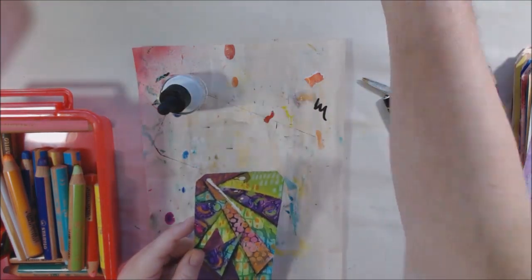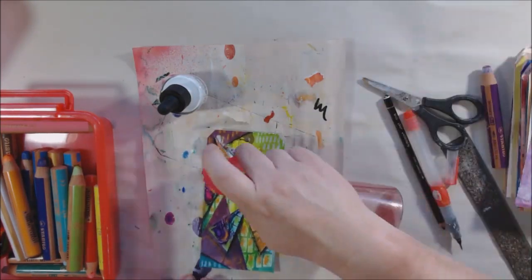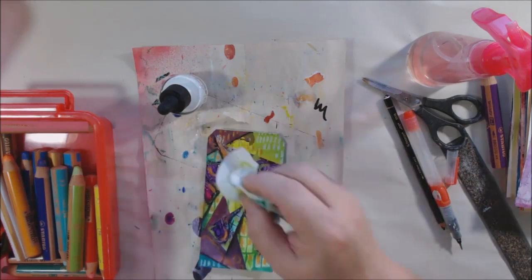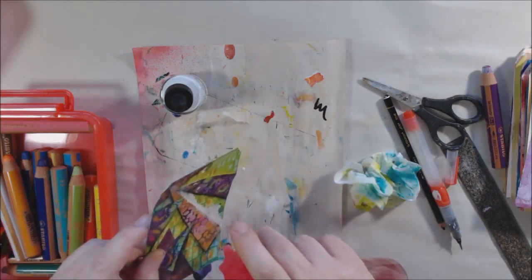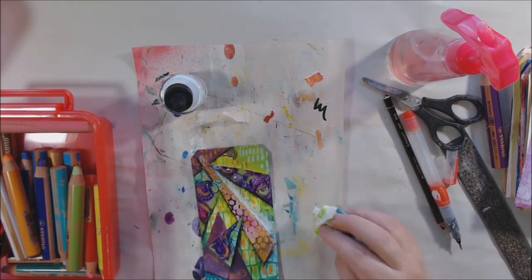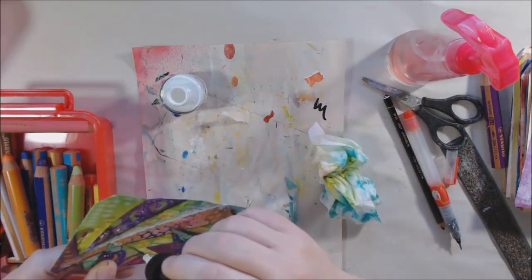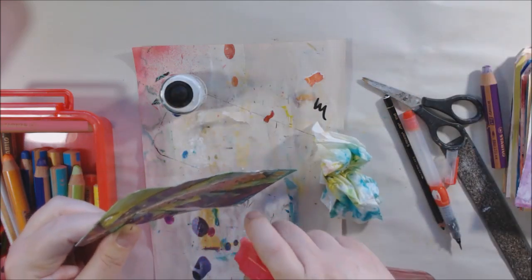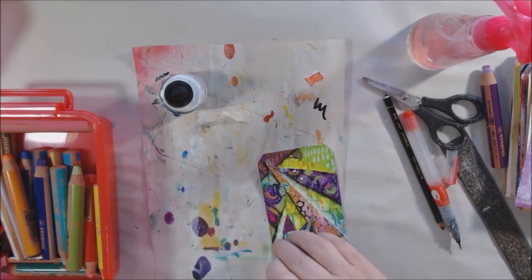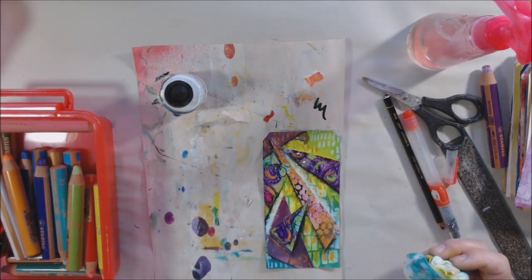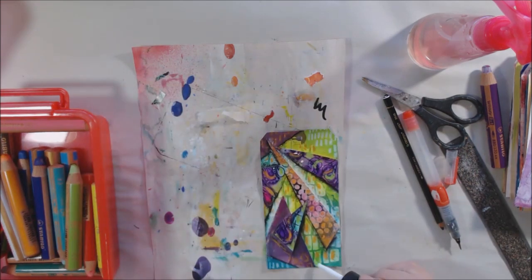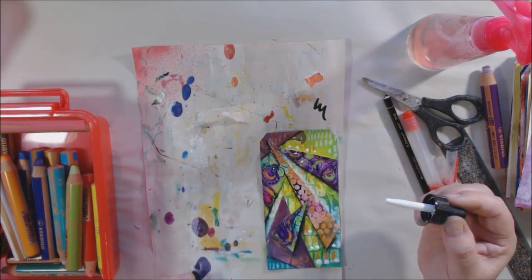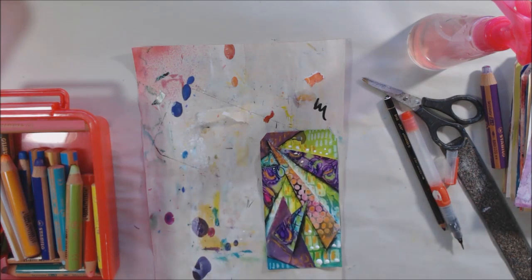Then I decided maybe I needed some more white and maybe some drips or something on the side that has the lighter area, doesn't have the shadow. So I took white India ink and just let it drip down that one piece in the middle with the orange and pink dots, which is watercolor paper so it's thicker than the other stuff. It gave kind of a guide for where that ink would drip down.